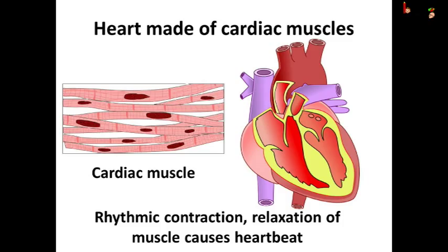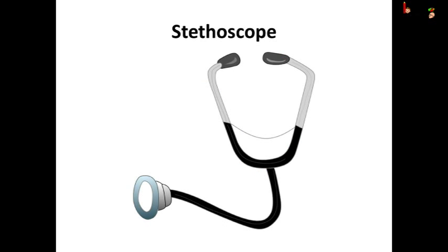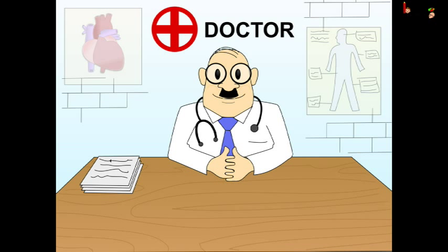If you check your pulse, you would find that it has a fixed rhythm. The heart is made of muscles, especially the cardiac muscles. Cardiac muscles contract and relax in a fixed rhythm. This rhythmic contraction and relaxation of the heart is called the heartbeat. We can also listen to the heartbeat using a stethoscope, just like the doctor does.